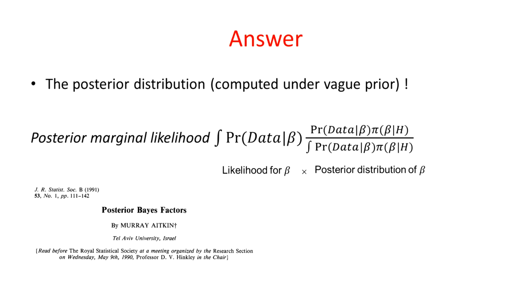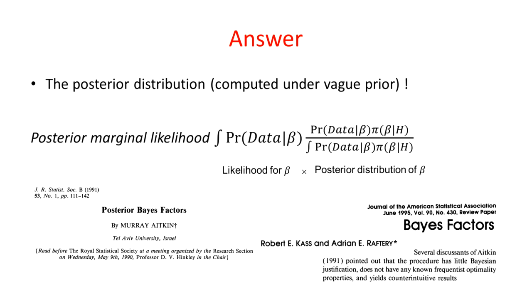This gives us posterior Bayes factors, as proposed by Aitken back in the 1990s. Now, this didn't go down too well. As summarized here in the definitive review of Bayes factors, the procedure has little Bayesian justification and does not have any known frequentist optimality properties.